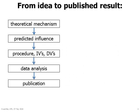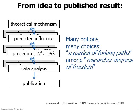In idealized scientific method, a posited theoretical mechanism generates a predicted influence, which is measured by some procedure involving independent and dependent variables, followed by data analysis and publication. In reality, every one of those steps involves many options and many choices. It's a garden of forking paths among researcher degrees of freedom.